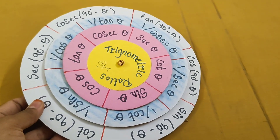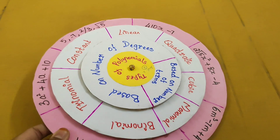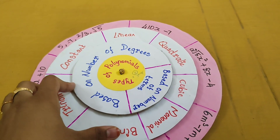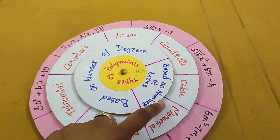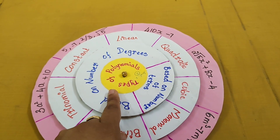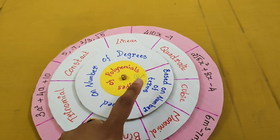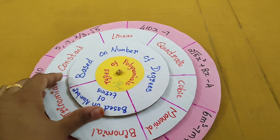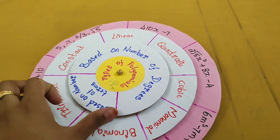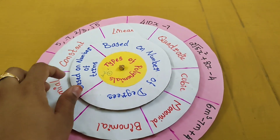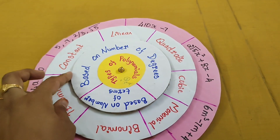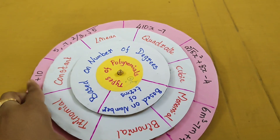We have 3 answers. This is class 9. The rotating board is full of class 9 content. Now let's rotate 3 boards. Types of polynomials — one side is based on terms and the other side is based on degree. In the second board, there are binomials, quadratics, and all types, based on degree and based on term.